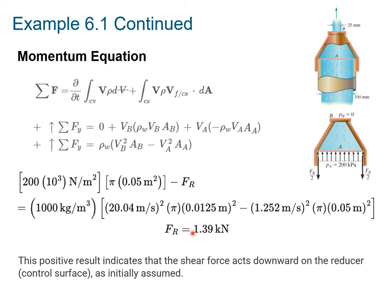So that indicates the shear force acts downward on the reducer as we assumed. If we got a negative sign, that would have meant that we guessed wrong here.